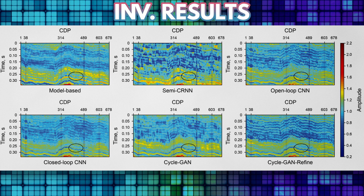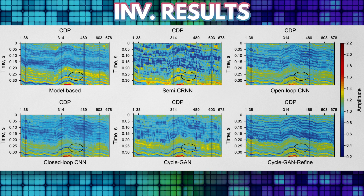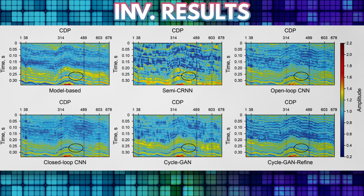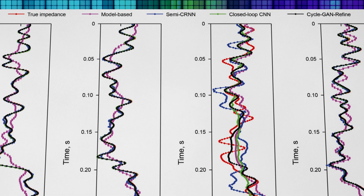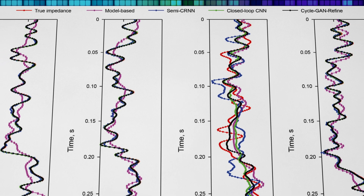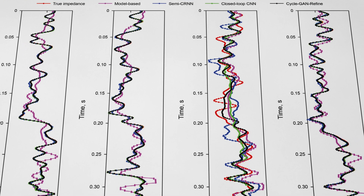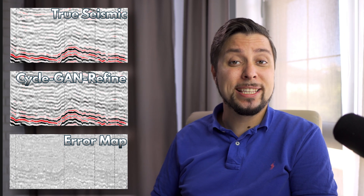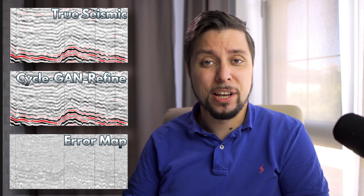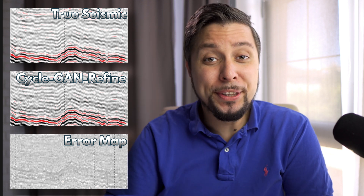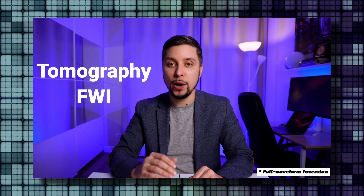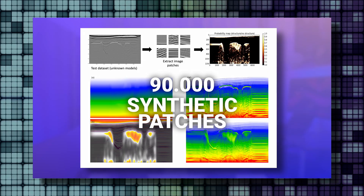The inversion results with the proposed method are more continuous and cleaner than those of alternative approaches. Take note of the black circles in the figure — it's clear that the inversion results of AI-based methods are significantly more accurate than the results of model-based inversion on the labeled near-well traces. Finally, we can look at the reconstructed seismic image calculated from the predicted impedance.